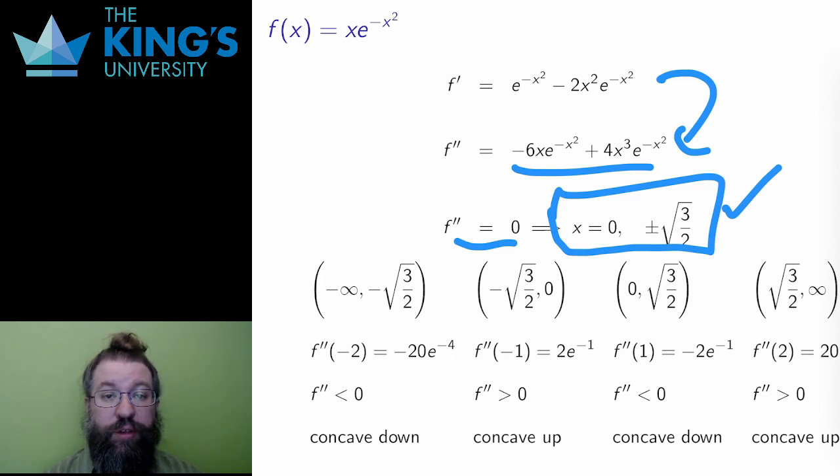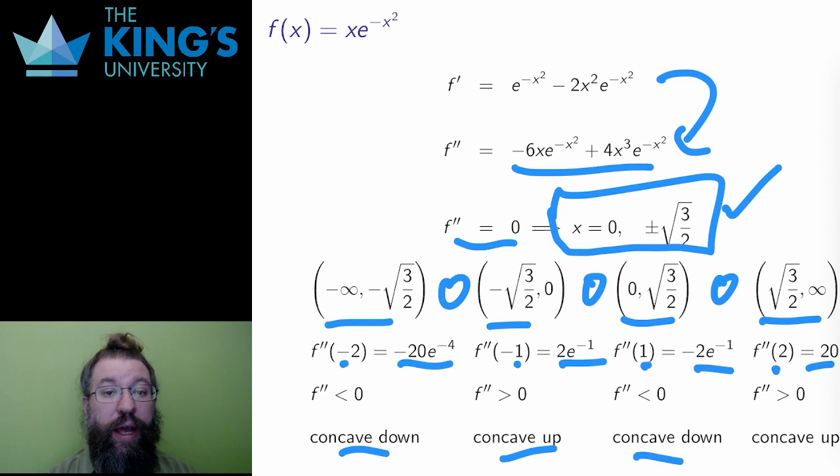There are three points, and the domain is still all reals, so I get four intervals. I test the second derivative on these four intervals, choosing negative 2, negative 1, 1, and 2, putting those four into the second derivative gives values that are negative, positive, negative, and then positive. So all three points have change of concavity, which means that they are all inflection points, and the concavity is down, then up, then down, and then up.